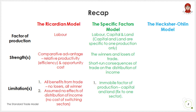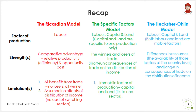In the Heckscher-Ohlin model, multiple factors of production can move across sectors. Differences in resources — that is, the availability of those resource factors at the country level — will drive trade patterns. This model also captures the long-run consequences of trade on the distribution of income.